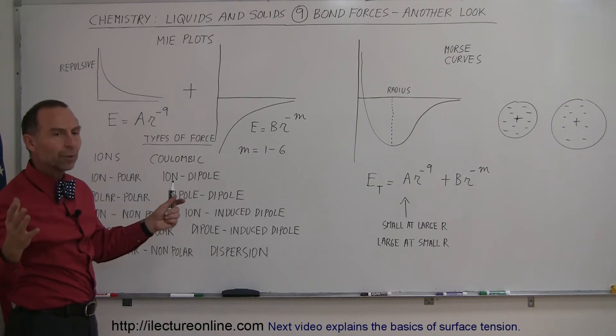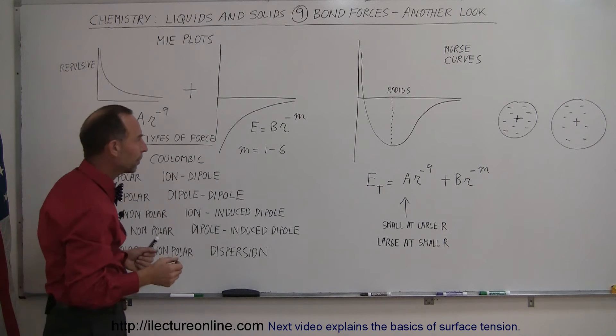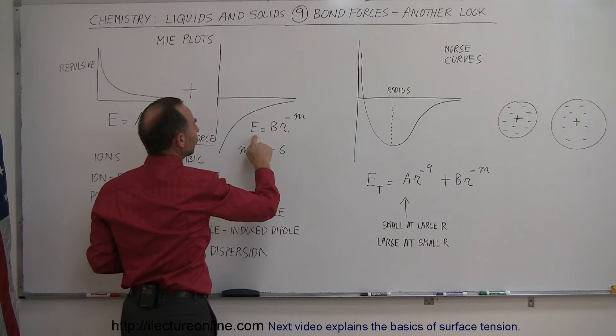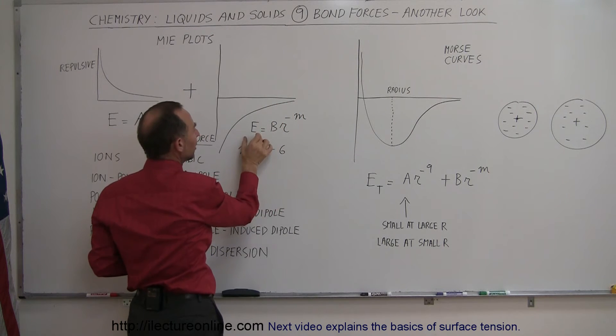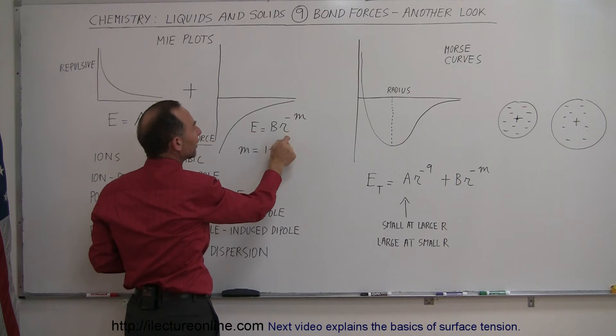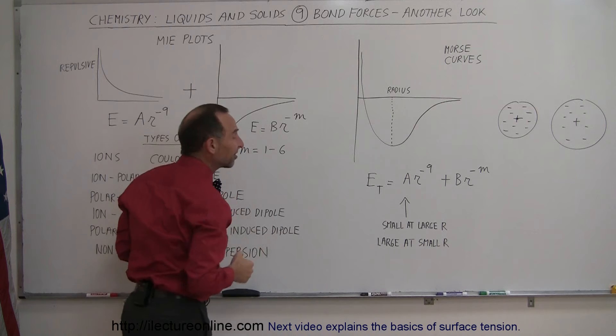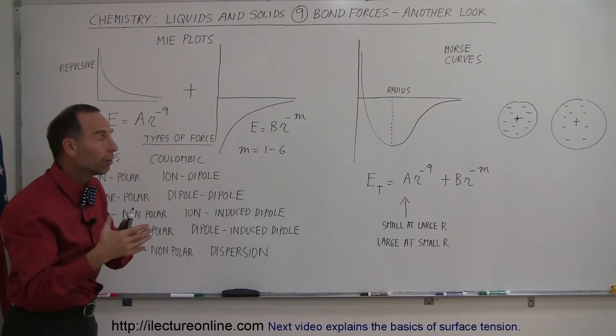At the same time, when you bring the atoms together, the bond forces between the orbitals will get stronger to the tune of E, the energy there is equal to some other constant, times r to the minus m. And m can be anywhere from 1 to minus 6, depending upon how many electrons are involved in the bonding.